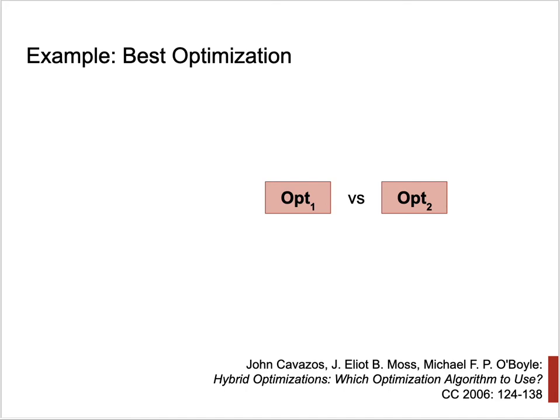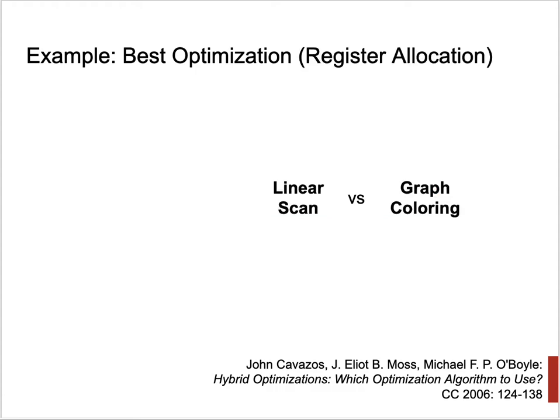This problem was introduced by John Cavazos in the early 2000s. He was interested in register allocation in the context of just-in-time compilation. Given a Java method, is it better to compile it with linear scan — which is faster but yields worse code — or with graph coloring — which is slower but yields better code?